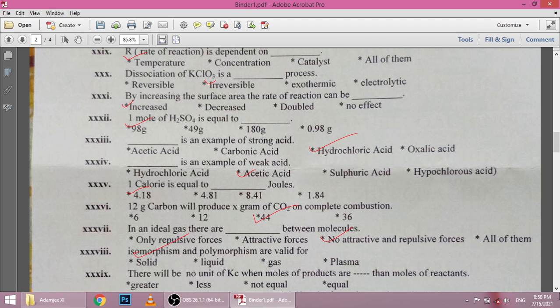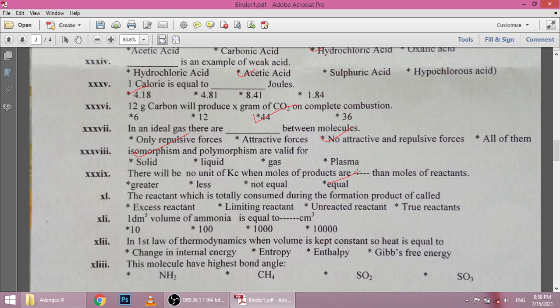There will be no unit of K_c when moles of product are equal to the moles of reactant. The reactant which is totally consumed during the formation of product is called limiting reactant. 1 dm³ of ammonia equals 1000 cm³. First law of thermodynamics: when volume is kept constant, heat equals internal energy. This molecule has highest bond angle, which is 120 degrees for trigonal planar.